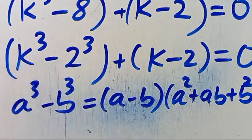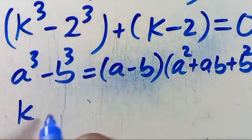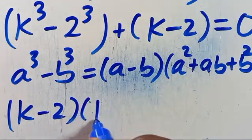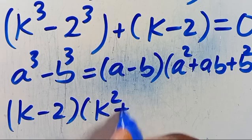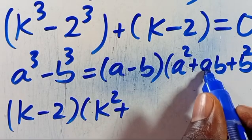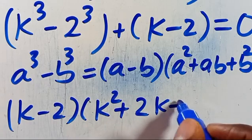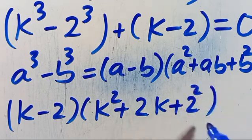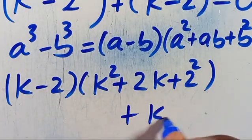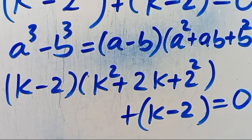So let's apply it here. Our a is k, our b is 2, giving k minus 2. When you apply it to this expression, here will be k squared, plus a times b which is 2k, then plus 2 squared. And from here we also have plus k minus 2 in parenthesis, then we have everything equal to 0.